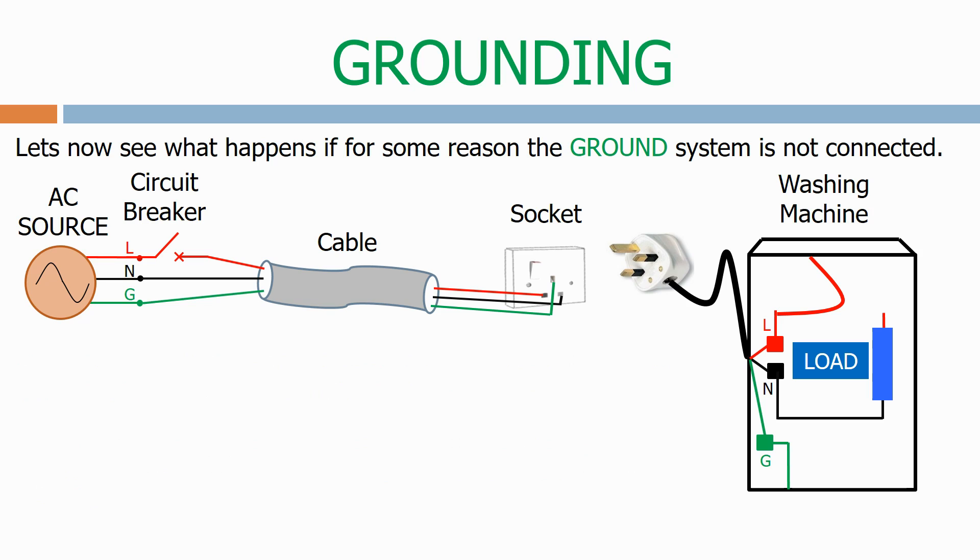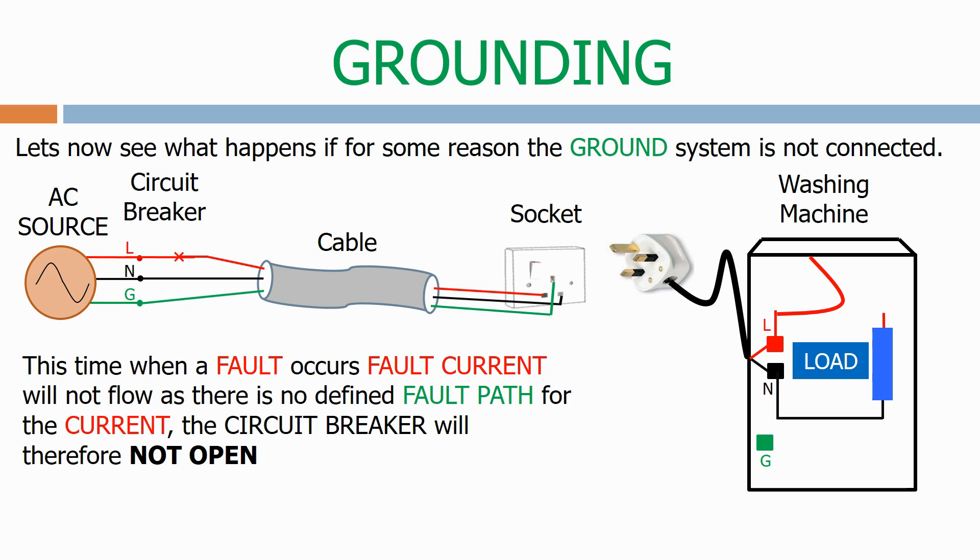Let's now see what happens if for some reason the ground system is not connected. This time when a fault occurs, the fault current will not flow as there is no defined fault path for the current. The circuit breaker will therefore not open.